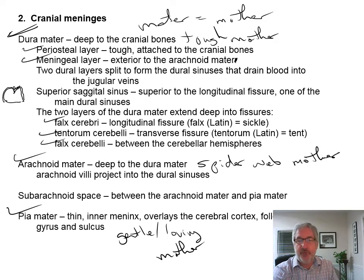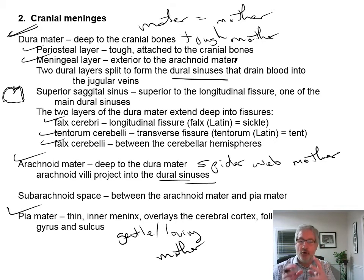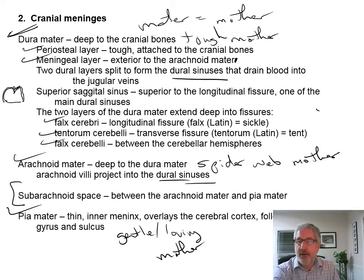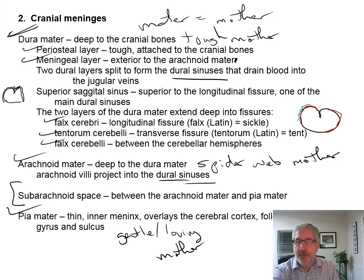The arachnoid mater has arachnoid villi that project into the dural sinuses. You have these dural layers with the dural sinus — the sinuses are openings — and there are arachnoid villi, little finger-like projections that project into the dural sinuses. There's also a space between the arachnoid mater and pia mater — that's where cerebrospinal fluid flows. The pia mater is all around the outside of the brain, the arachnoid mater is a kind of webbing around it, and the dura mater goes all the way around and dives down into the longitudinal fissure.